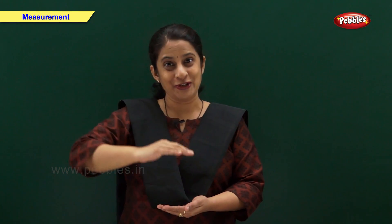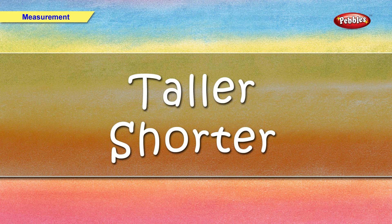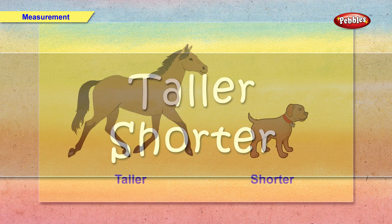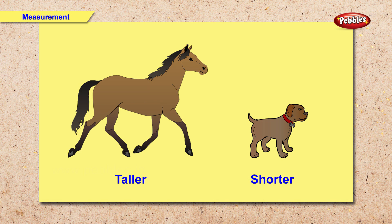Now let us see taller and shorter. Here we have a horse and a dog. Which animal is taller and which animal is shorter? A horse is taller and a dog is shorter.